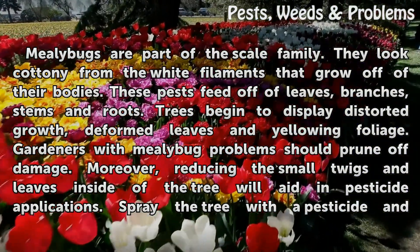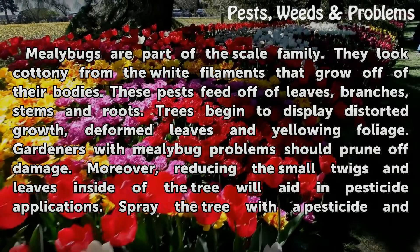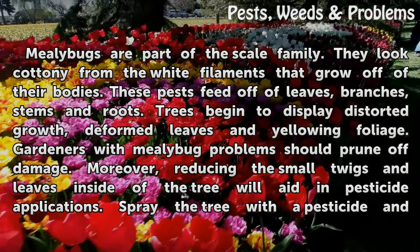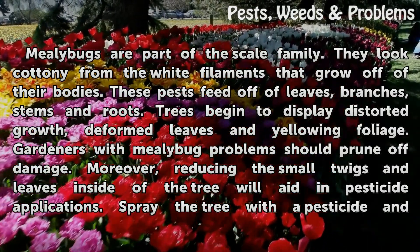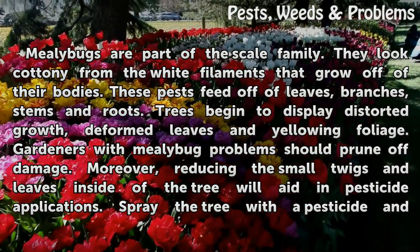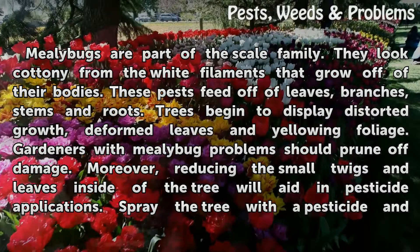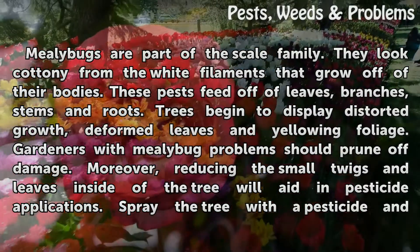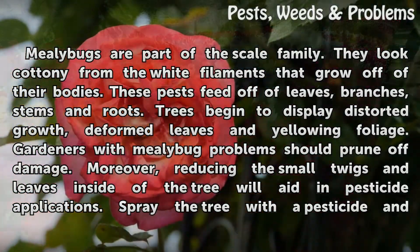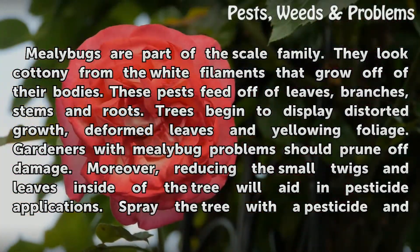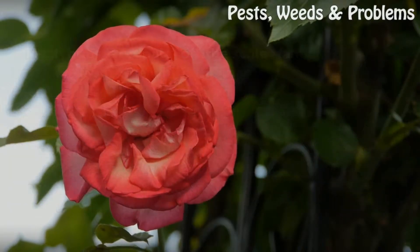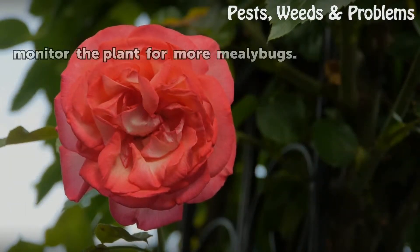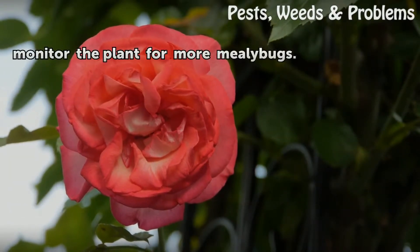Trees begin to display distorted growth, deformed leaves, and yellowing foliage. Gardeners with mealybug problems should prune off damage. Reducing the small twigs and leaves inside of the tree will aid in pesticide applications. Spray the tree with a pesticide and monitor the plant for more mealybugs.